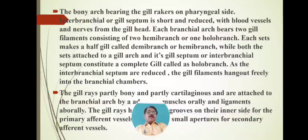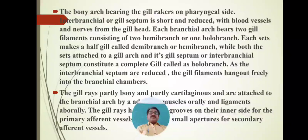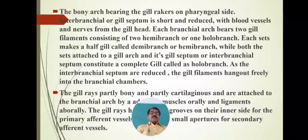The next part covers the structure of gills. The bony arch bears the gill rakers on the pharyngeal side. The interbranial or gill septum is short and reduced, with blood vessels and nerves from the gill head. Each branchial arch bears two gill filaments.